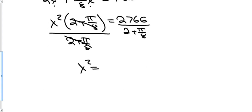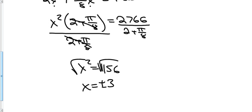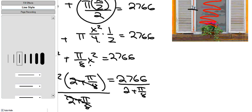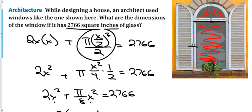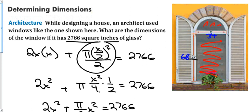From the calculator, x squared equals 1,156. Taking the square root gives plus or minus 34. We don't need the negative because x represents a length, so x equals 34 inches. That means 2x equals 68 inches. We used what we know about squares to solve an actual word problem.